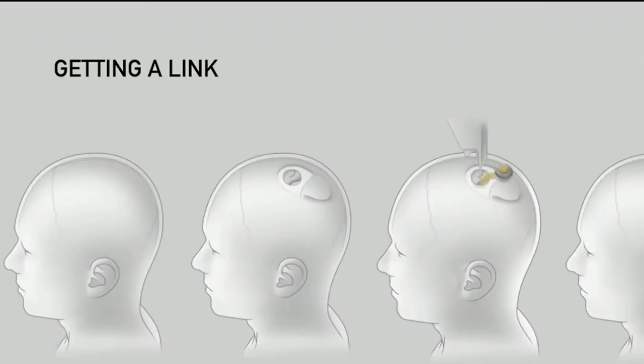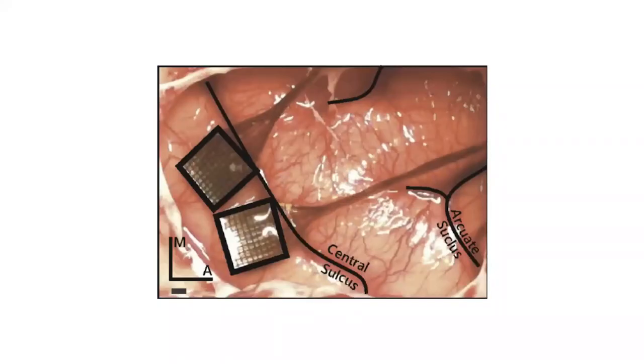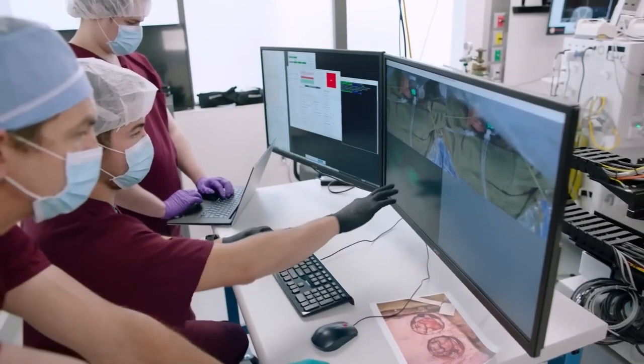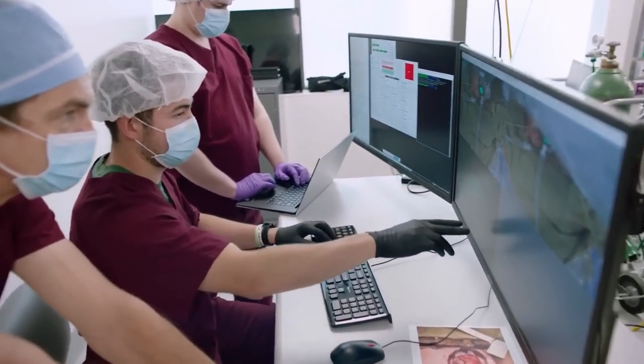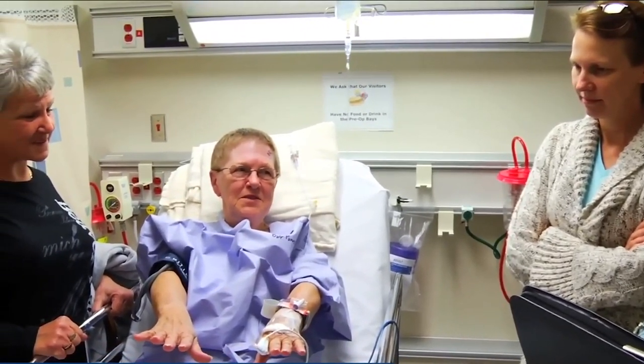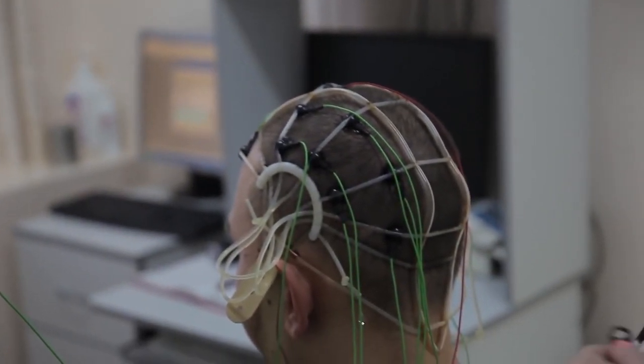The procedure needs only a 2mm incision that is widened up to 8mm. The chip module will cover the exposed portion of the skull when the treatment is finished, while the patient is under partial anesthesia. Musk added that after the device is implanted, there won't be any cables or antennae protruding from your head.